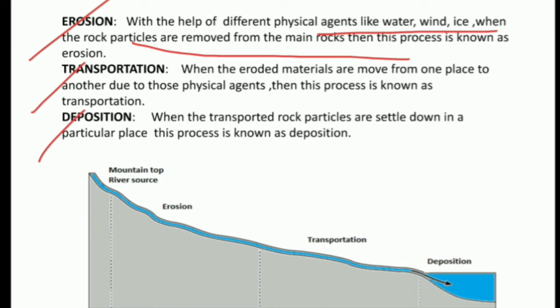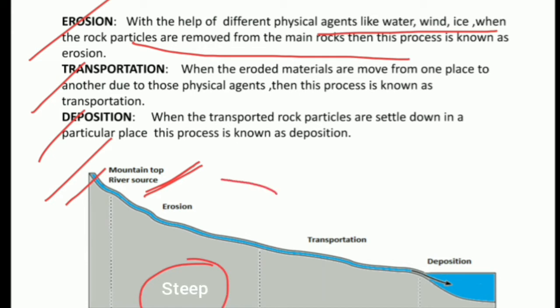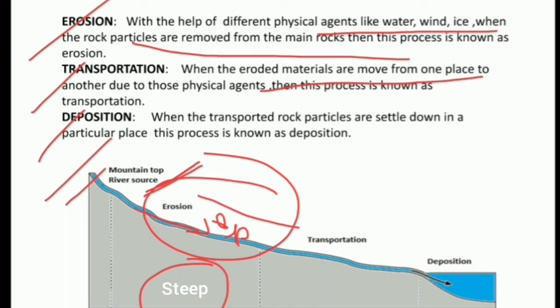Looking at this picture, we have the mountain top as the source of the river. The river has a steep slope, and that's why erosion takes place because the river is at its highest energy. Now, transportation: when the eroded materials are moved from one place to another, from the steep slope region to the gentler slope region, this process of movement is simply known as transportation.